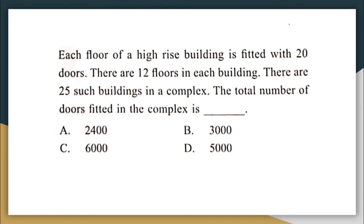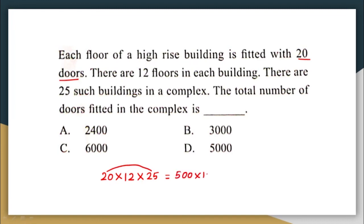Next question: each floor of a high-rise building has 20 doors, there are 12 floors per building, and there are 25 such buildings in a complex. Total doors: 20 doors per floor multiplied by 12 floors gives 240 doors per building. Then 240 multiplied by 25 buildings — or equivalently 25 multiplied by 20 is 500, and 500 multiplied by 12 is 6,000. The correct answer is option C, 6,000 doors.